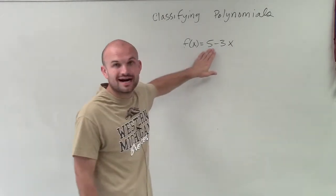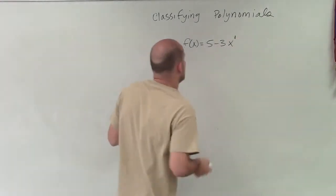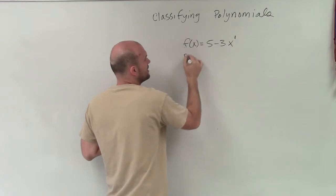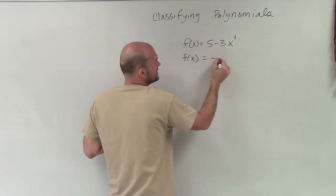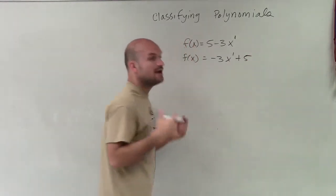We can see that 5 is our constant term, and then we have x, which can be written to the first power. So to write this with my variable as my first term, I'll write f(x) = -3x to the first plus 5. Now it's in descending order,